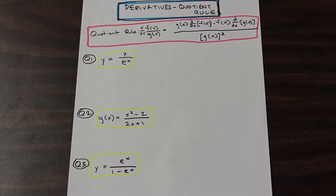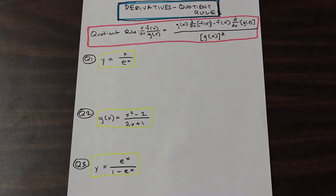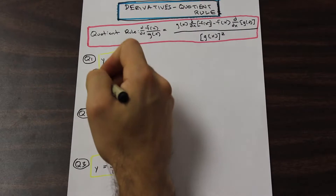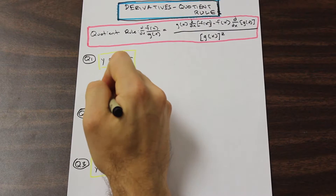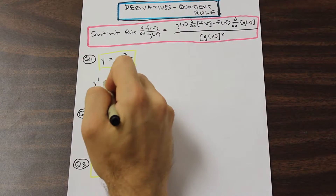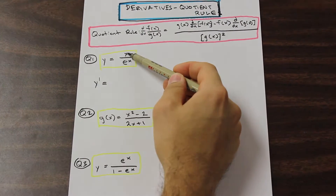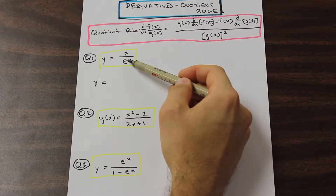So let's get started on a few questions. We'll solve some more in another video, and hopefully by then this is a breeze for you. Let's start with question one. We have y is equal to x over e to the x. Pretty simple problem, we're going to start off with something easy. So we're going to say that y prime is equal to, and let's go ahead and apply the quotient rule. We have an x term on the top and e to the x on the bottom.